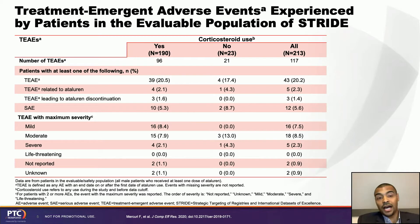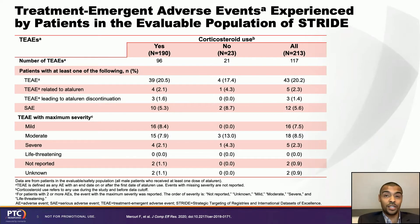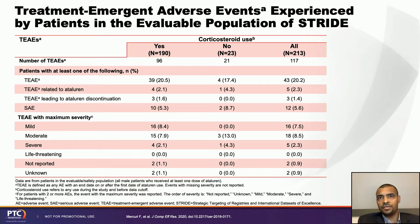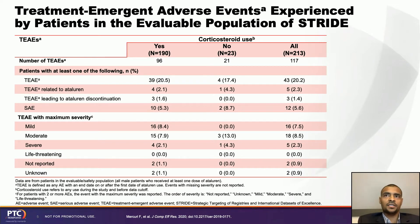Ataluren is consistently well tolerated. The evaluable safety population includes 213 boys across 11 different countries. On average the boys have received treatment for 632 days, and the majority are taking concomitant corticosteroids. Treatment-emergent adverse events were generally mild to moderate in severity, none of the severe adverse events were related to the drug, and there were very few overall. Ataluren continues to be well tolerated with no emerging safety signals.